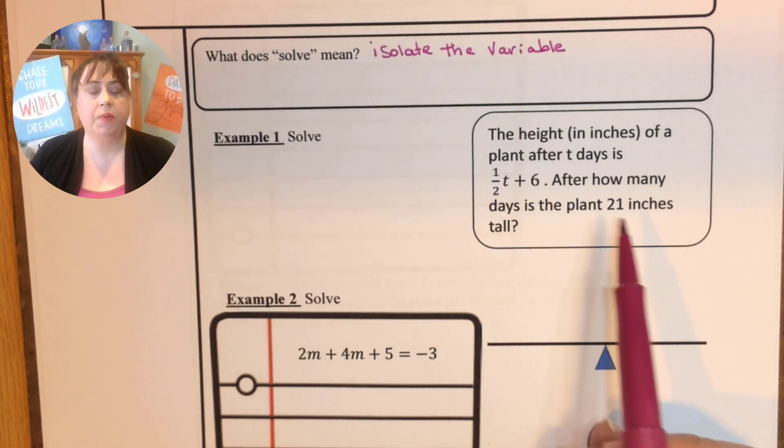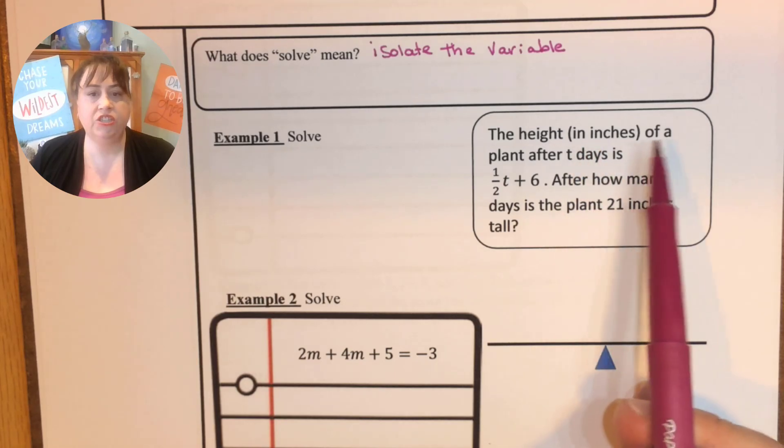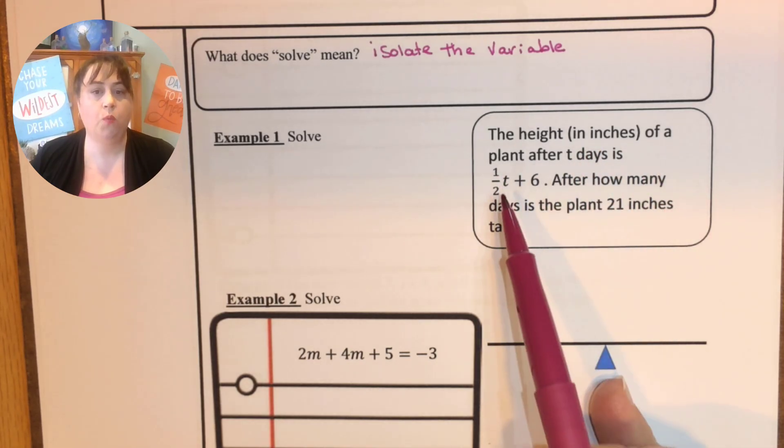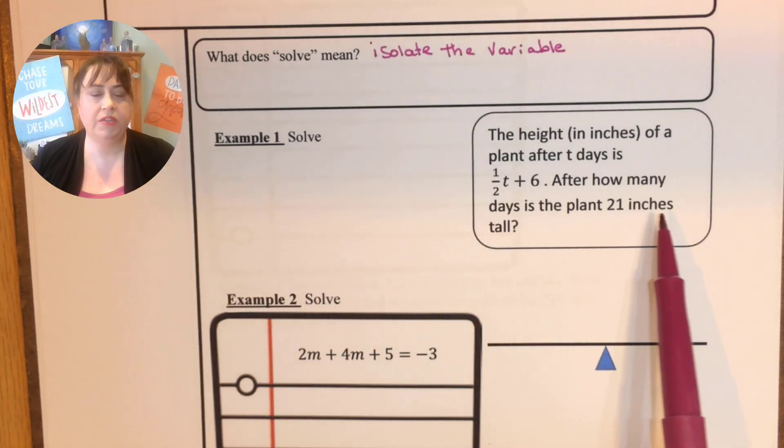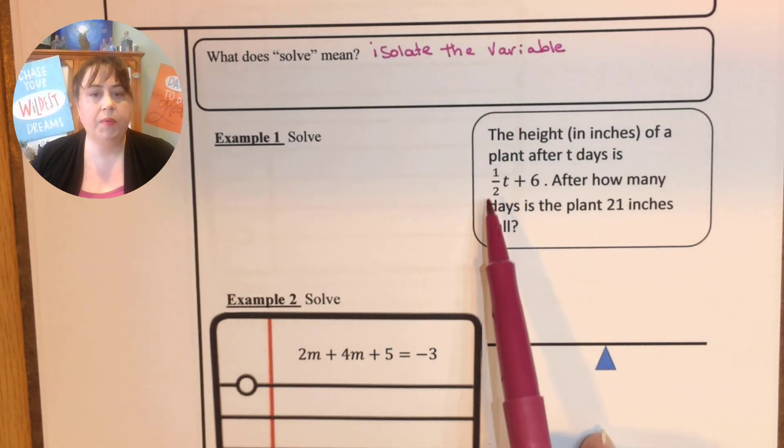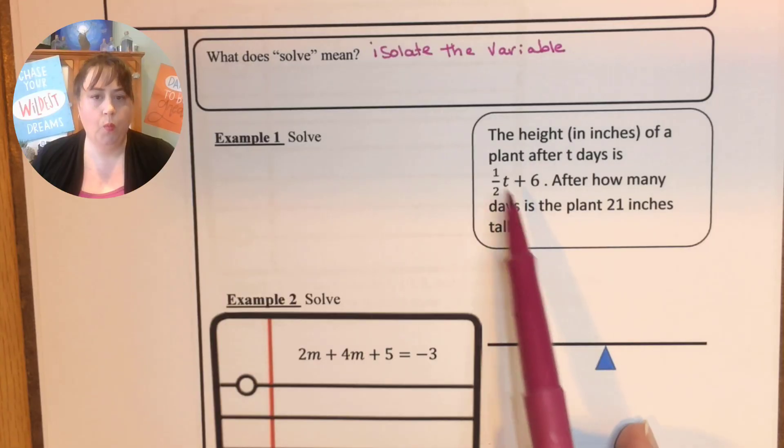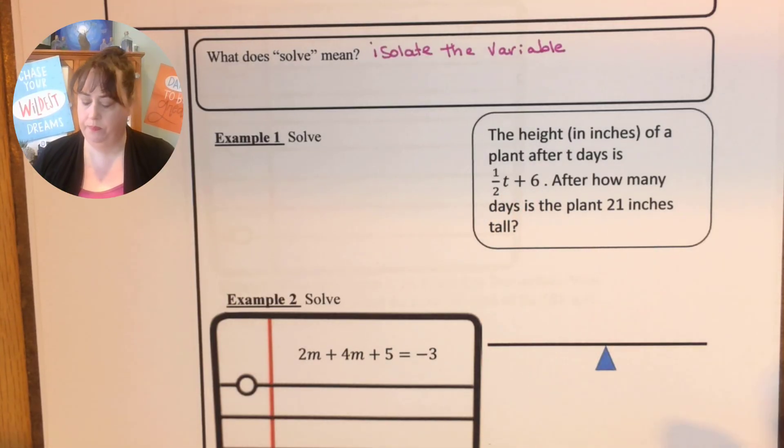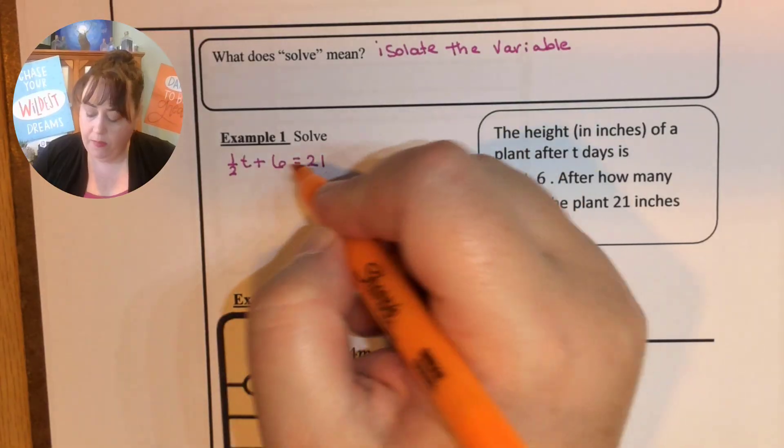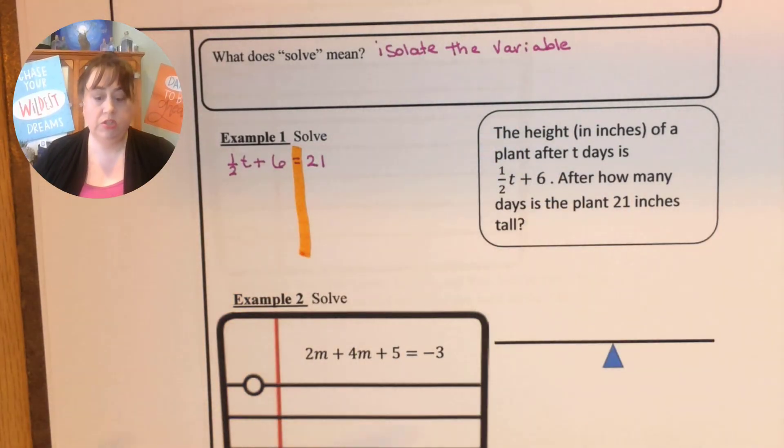So let's show as a word problem. The height in inches of a plant after t days is one half t plus six. After how many days is the plant 21 inches tall? So we want to know when this expression one half t plus six is equal to 21. And we are going to put in our road. So remember we use this idea of a road to help us remember to do the same thing to both sides of an equation.